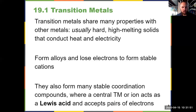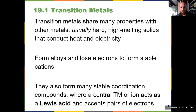Transition metals are still metals, so they tend to be hard, they tend to have high melting points, and they tend to conduct heat and electricity in their metallic form. They can form cations — not anions — just positively charged cations by losing electrons. We can also form alloys with them to impart special properties.